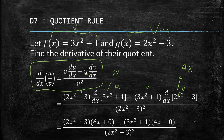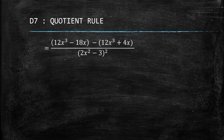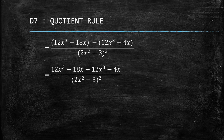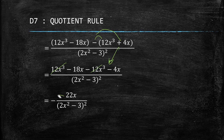That result comes from distributing 6x and 4x respectively. Removing the grouping symbol, the plus becomes negative after distributing the negative sign. Simplifying further, the 12x cubed terms cancel, and negative 18 minus 4 gives negative 22x. So the final derivative is negative 22x over (2x squared minus 3) squared.